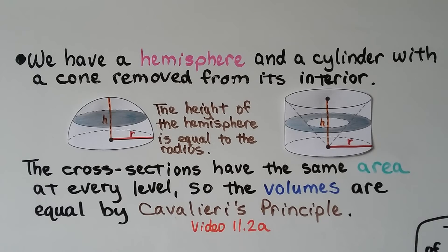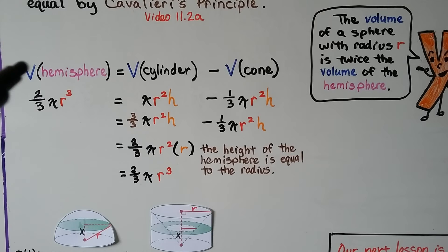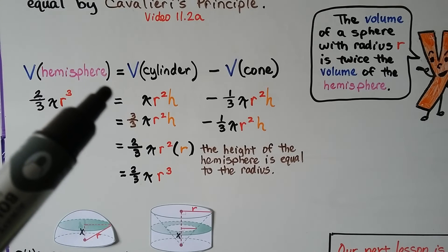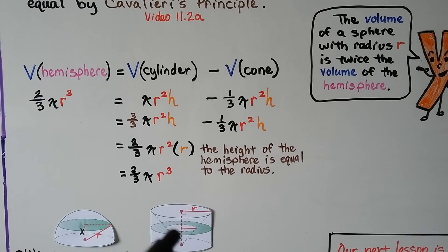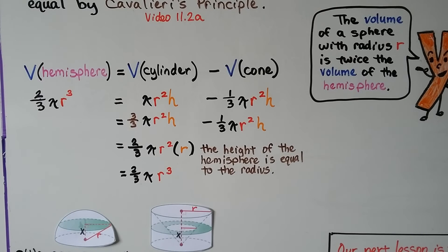If you missed that, there will be a link in the description for it. The volume of the hemisphere is equal to the volume of the cylinder minus the volume of the cone.